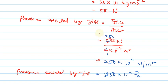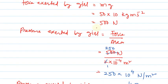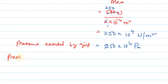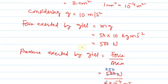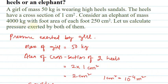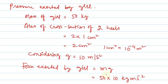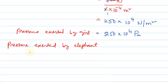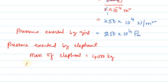Now let us find the pressure exerted by the elephant. Given data: mass of elephant is 4000 kilograms. Area of cross-section of each foot is given as 250 centimeter square. So area of cross-section of 4 feet of the elephant equals 250 centimeter square into 4.